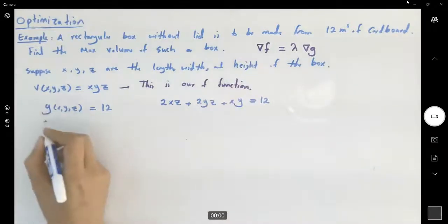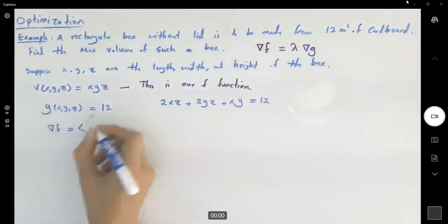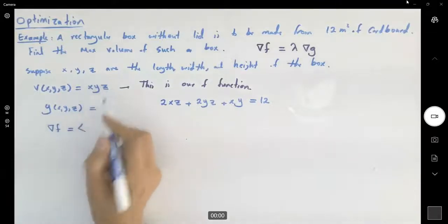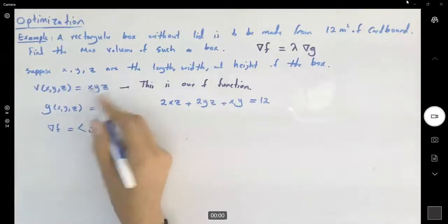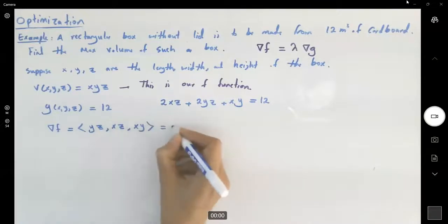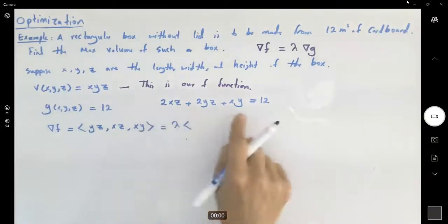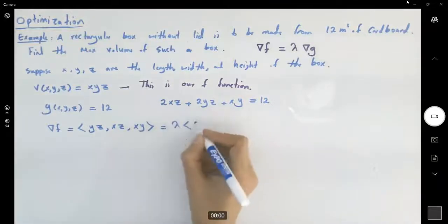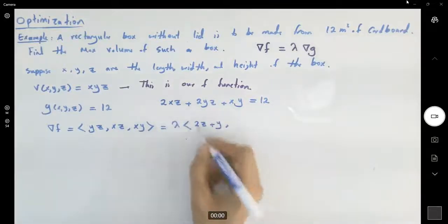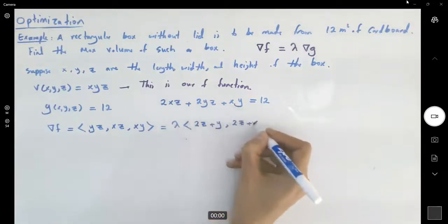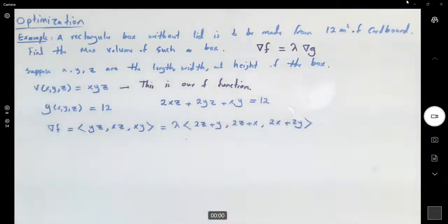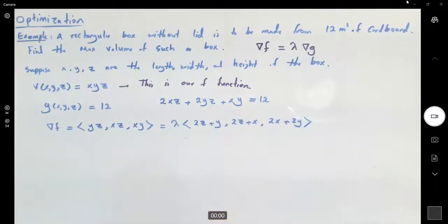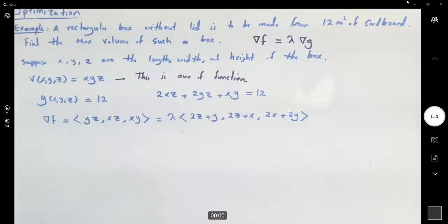The gradient of the volume equals the partial derivative with respect to x (which is yz), with respect to y (which is xz), and with respect to z (which is xy). This equals lambda times the gradient of the constraint: with respect to x we have 2z plus y, with respect to y we have 2z plus x, and with respect to z we have 2x plus 2y. I'm done with the calculus part — now pure algebra.